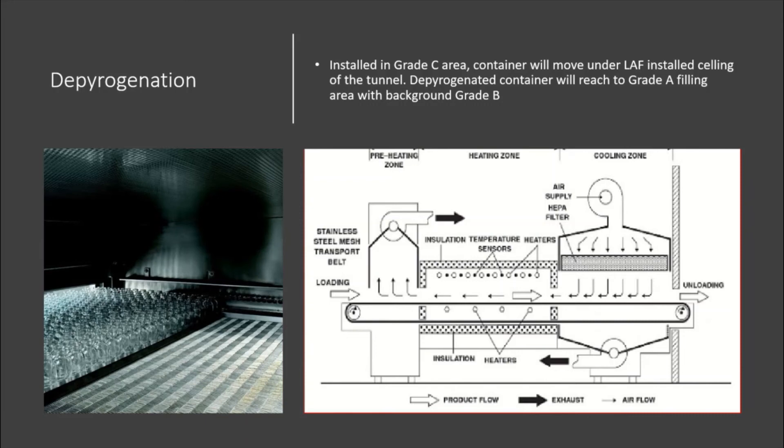In the same Grade C area, we will also have the depyrogenation tunnel, where the washing machine is installed. As you know, tunnels are divided into a preheating zone, heating zone, and cooling zone. The container will go through a subsequent heating process, cool down, and then move to the filling area. That area is Grade C, although the containers move through the tunnel under LAF.